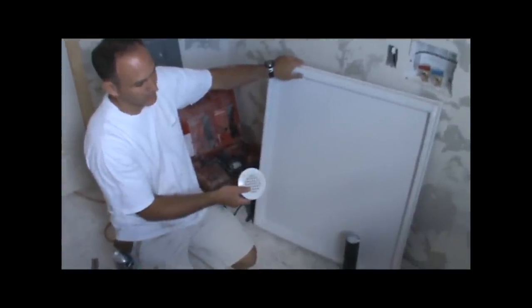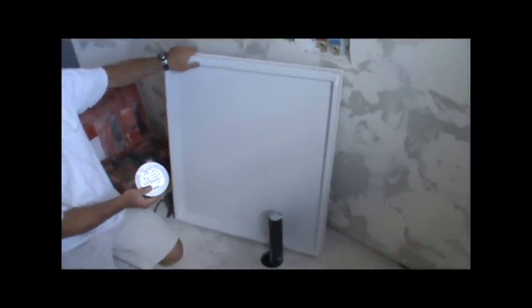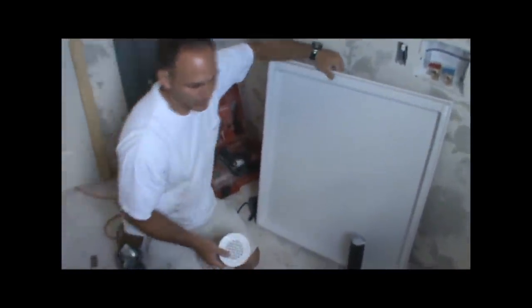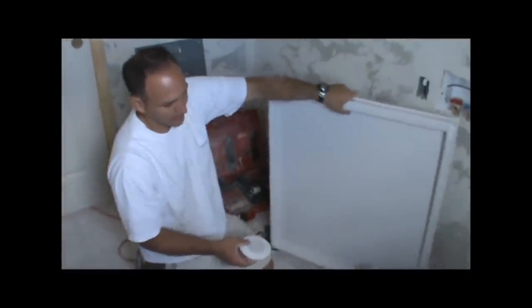This is a washer pan, just for the washer only. They have the washer and dryer pan, but this is just the washer. The builder specified that he just wants washer pans, so we're going to install this washer pan right here.